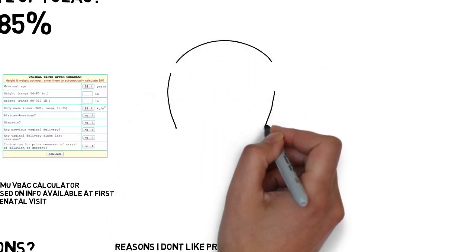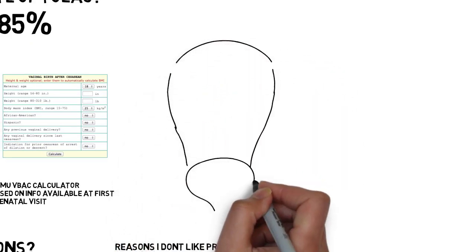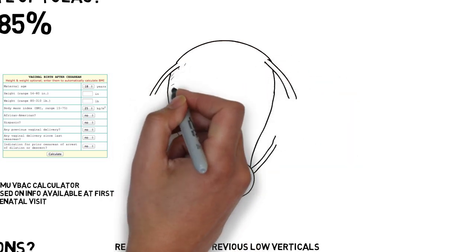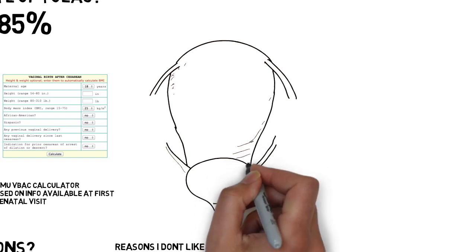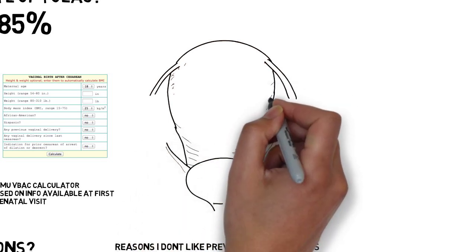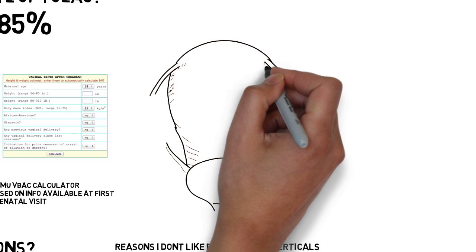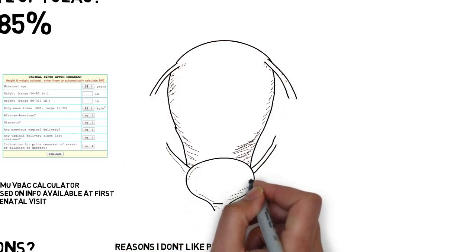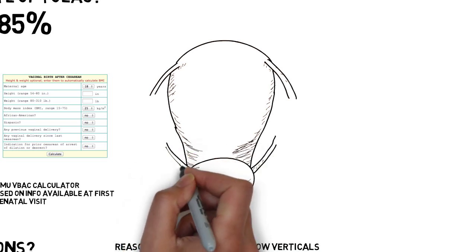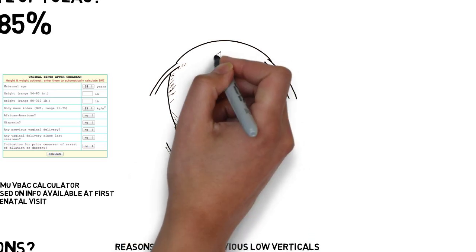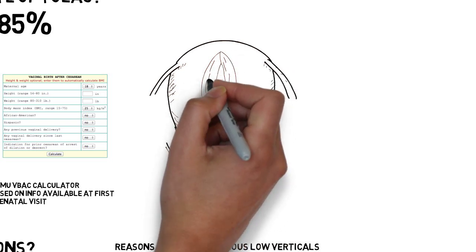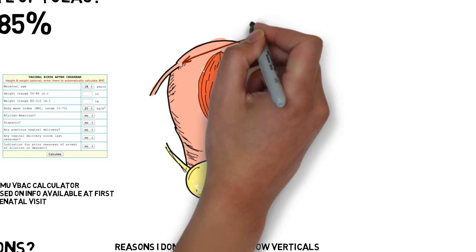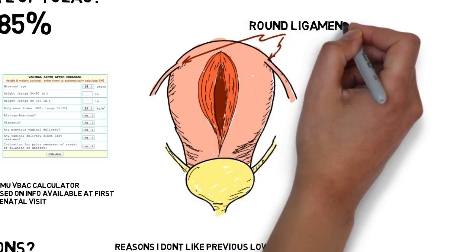Starting with the definition, the low vertical is vertical, but still in the lower, non-contractile portion of the uterus. A classical incision involves the fundus, which is the contractile portion and has a significantly higher risk of rupture. The problem is that the contractile and non-contractile portions are not well demarcated. Some texts actually say that it is a low vertical if it ends before the level of the round ligaments. They may not have noticed that the round ligaments attached to the uterus at the tippy, tippy top of the uterus.